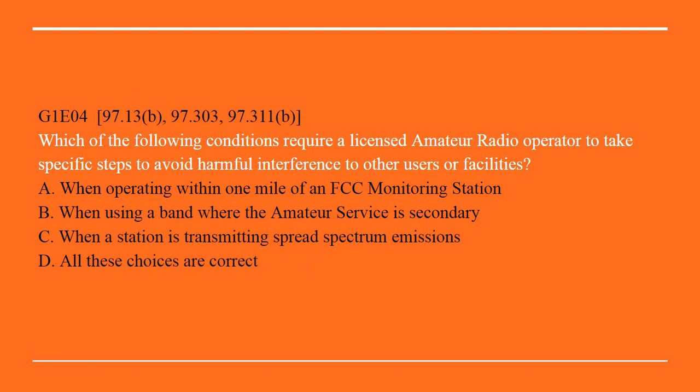G1E04: Which of the following conditions require a licensed amateur radio operator to take specific steps to avoid harmful interference to other users or facilities? A. When operating within one mile of an FCC monitoring station. B. When using a band where the amateur service is secondary. C. When a station is transmitting spread spectrum emissions. Or D. All of these choices are correct. The correct answer is D: All of these choices are correct.